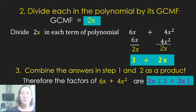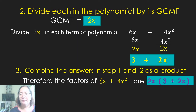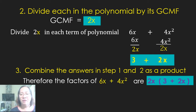Step 2: Divide each term in the polynomial by its Greatest Common Monomial Factor, which is 2x. Divide 2x into each term of 6x plus 4x²: 6x divided by 2x equals 3, and 4x² divided by 2x equals 2x. Then combine the answers in steps 1 and 2 as a product. Therefore, the factors of 6x plus 4x² are 2x times (3 plus 2x).